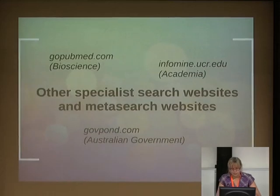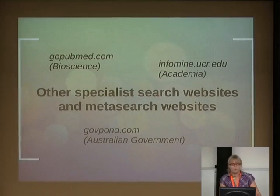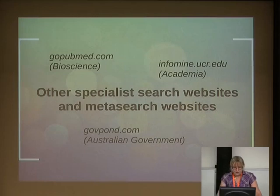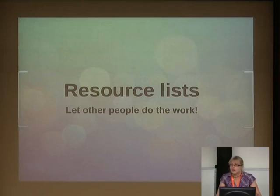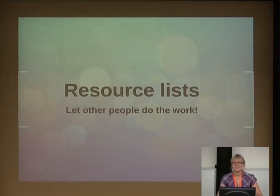There are also a bunch of specialist search websites. Infomind does academic documents, GoPubMed does bioscience, and GovPond — what we've been working on — is exclusively Australian government-focused, occasionally education-focused as well. Some of them are meta-search engines, like GovPond, which goes out to a bunch of relevant sites and pulls out everything for you — which is obviously quite handy. Fortunately most Australian sites use a CKAN database, which makes it very easy to query them in a standardised way. So if you're setting up a data site, set up a CKAN and we'll include you.